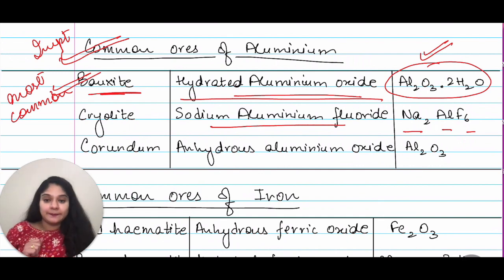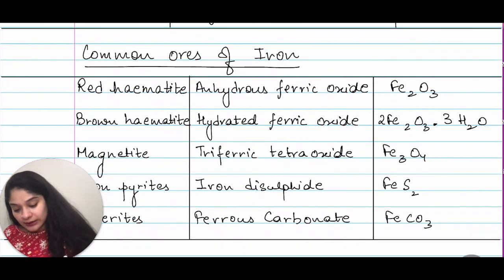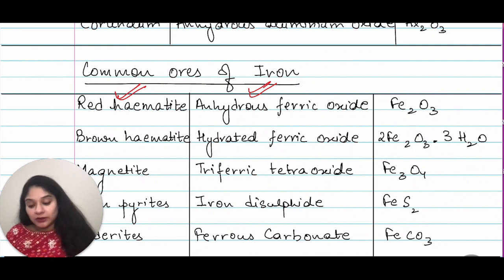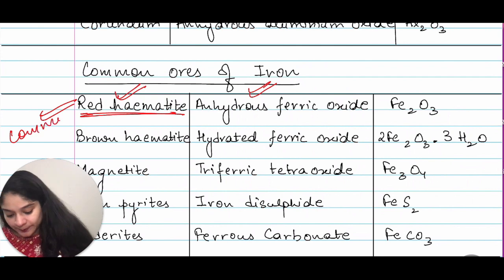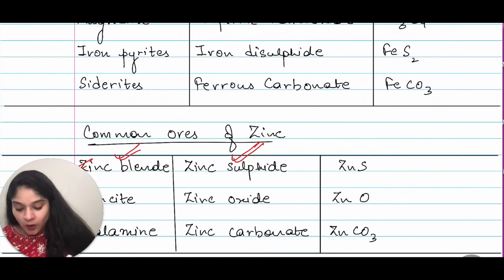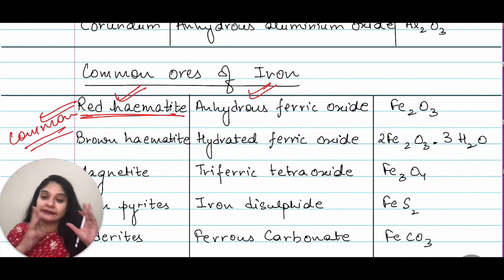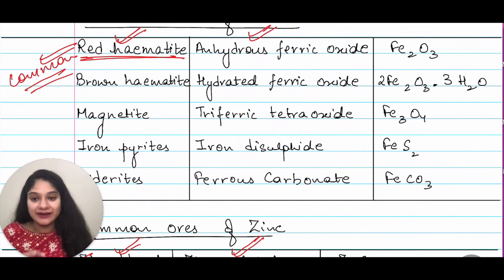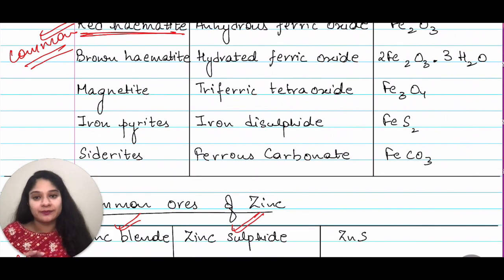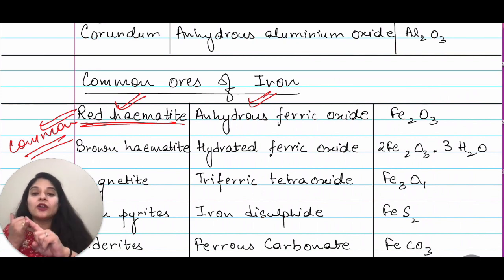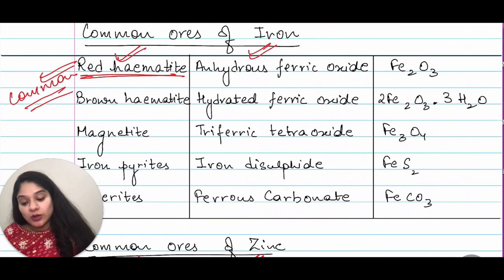For iron, you only have to remember the names — it's okay if you do not remember the formulas. The most common ore of iron is red hematite. The common ores of iron are: red hematite (anhydrous ferric oxide), brown hematite (hydrated ferric oxide), magnetite (triferric tetra oxide), iron pyrites (iron disulfide), and siderite (ferrous carbonate). You have to remember the common names and their chemical names.